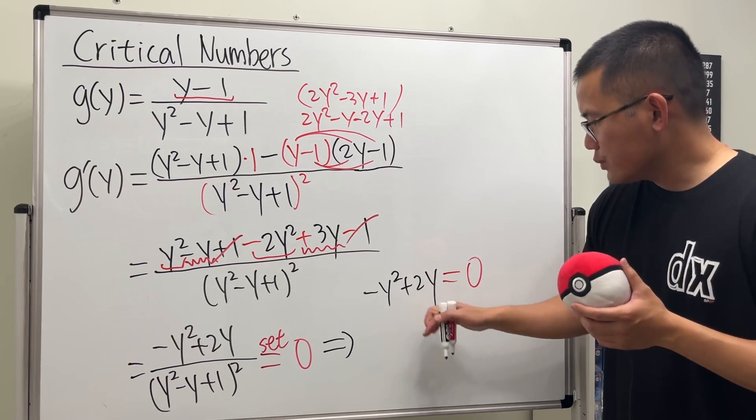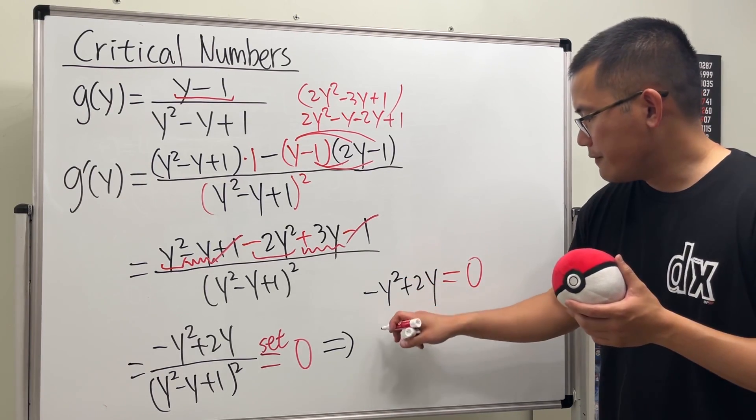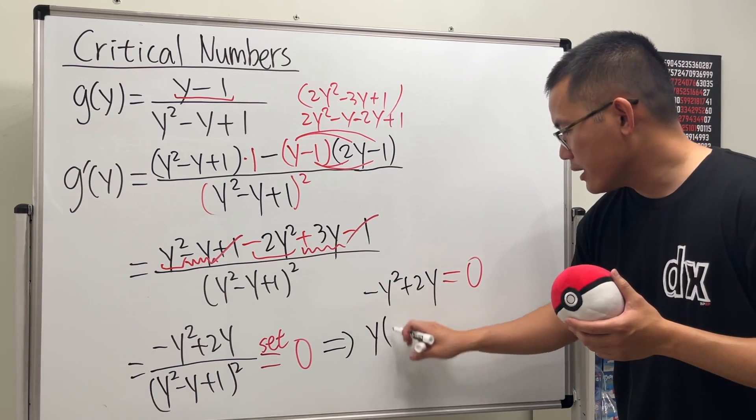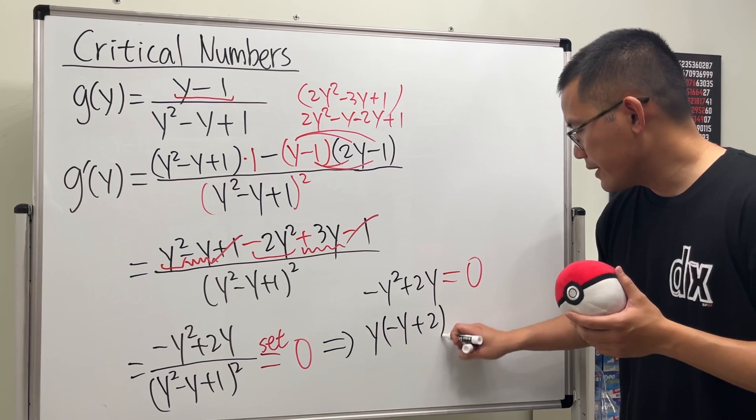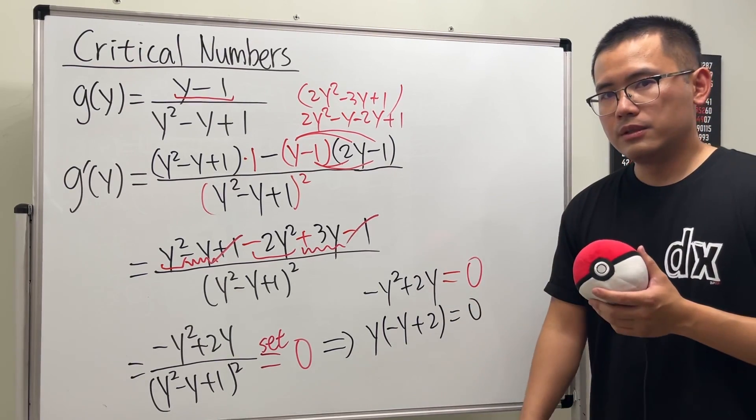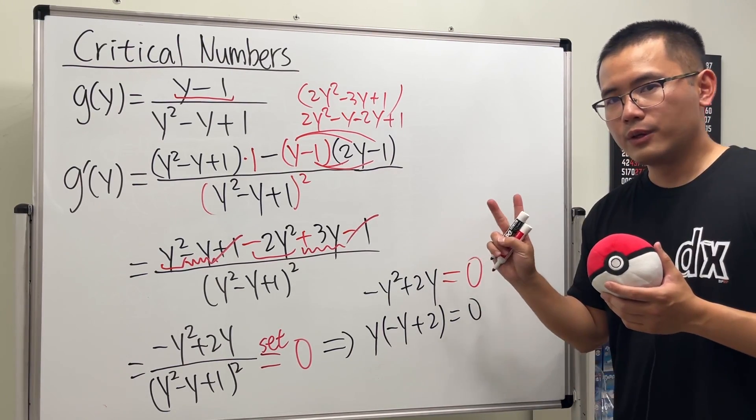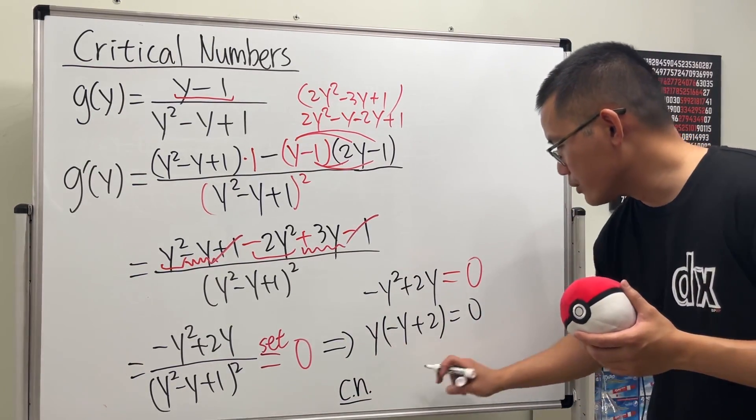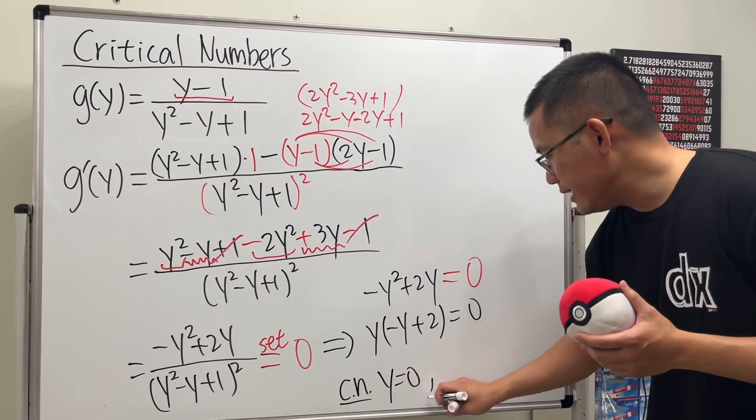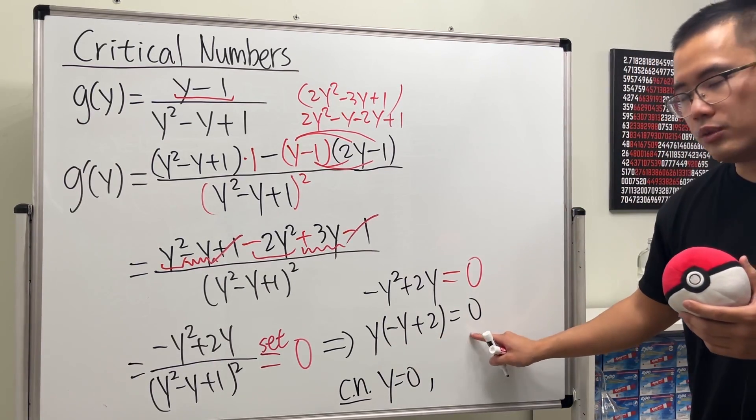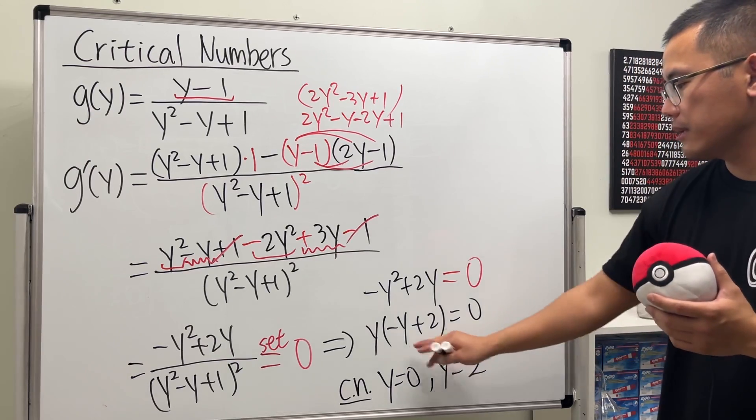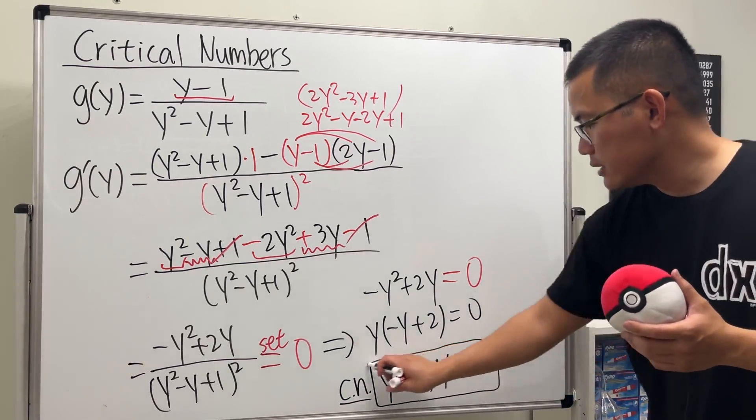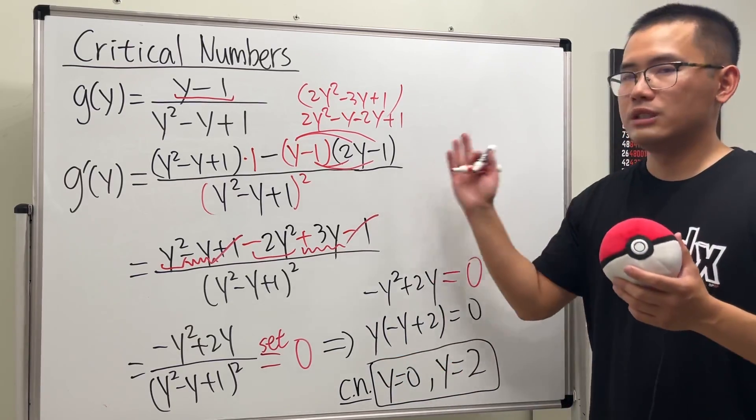So once we look at this, we can factor a little bit. We can factor out y or negative y, up to your taste. So factor out y, you get negative y and then plus 2. And that will be 0. So in fact, we have two critical numbers. The first one is y equal to 0. And the other one, you put this factor to be 0. So that means y will be equal to 2. Negative y plus 2 equals 0. So these are the two answers for the critical numbers for this function. And we are done.